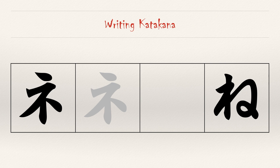The first stroke is the short stroke on the top. The second stroke is our hoo stroke, but it's narrower than usual. The third stroke is the vertical stroke at the bottom. And the fourth stroke starts at about the same place as the third, but it slants down to the right before it stops.